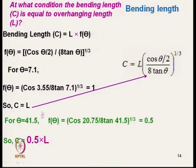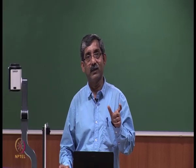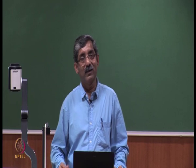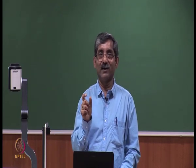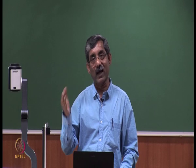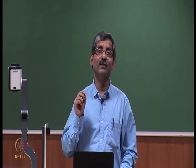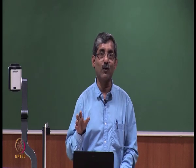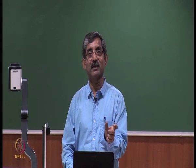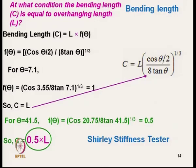We normally use 41.5 degrees in most instruments like the Shirley tester and FAST bending tester. With this simple formula, half of the overhanging length equals the bending length. That is why the scale in the Shirley tester is effectively doubled — what reads as 1 cm is actually 2 cm — so that the instrument directly displays the bending length rather than the overhanging length.